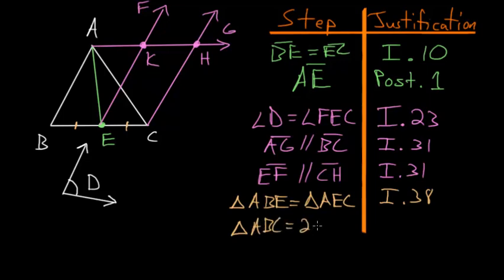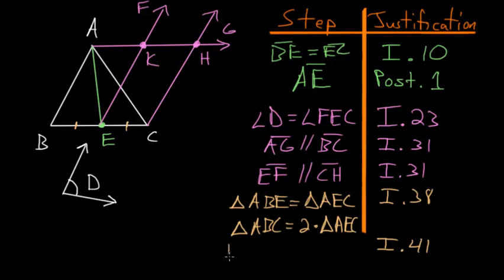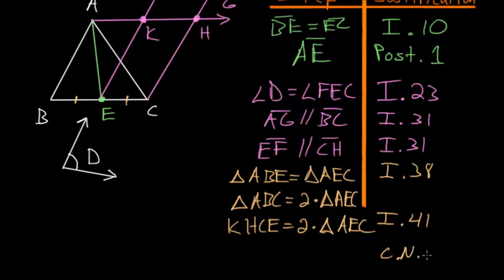We also know, by Book 1, Proposition 41, that triangle AEC and parallelogram KECH share the same base and lie between the same parallel lines, so parallelogram KECH equals twice triangle AEC. Since triangle ABC and parallelogram KECH are both equal to twice triangle AEC, by Common Notion 1 — things equal to the same thing are equal to each other — triangle ABC equals parallelogram KECH.